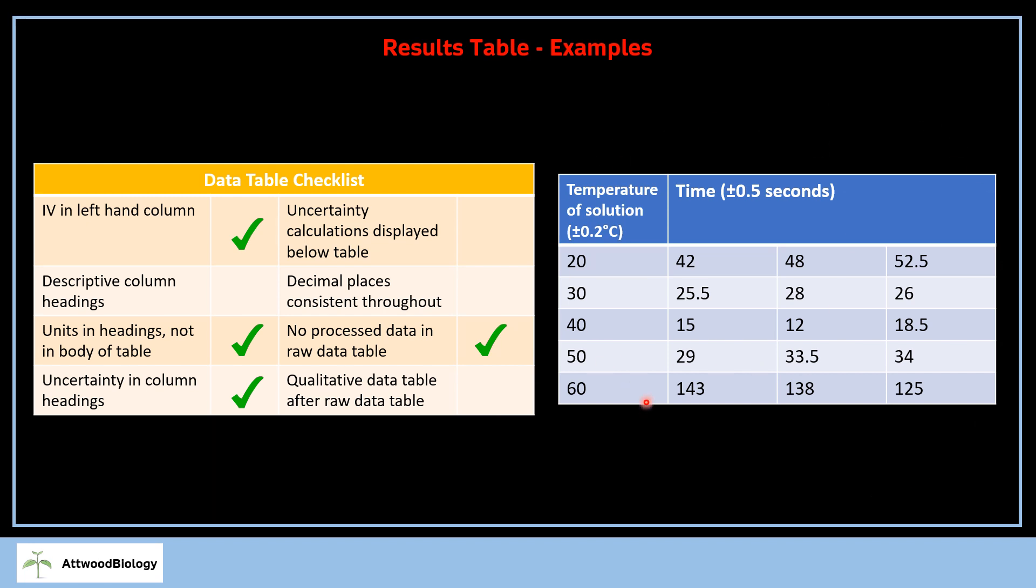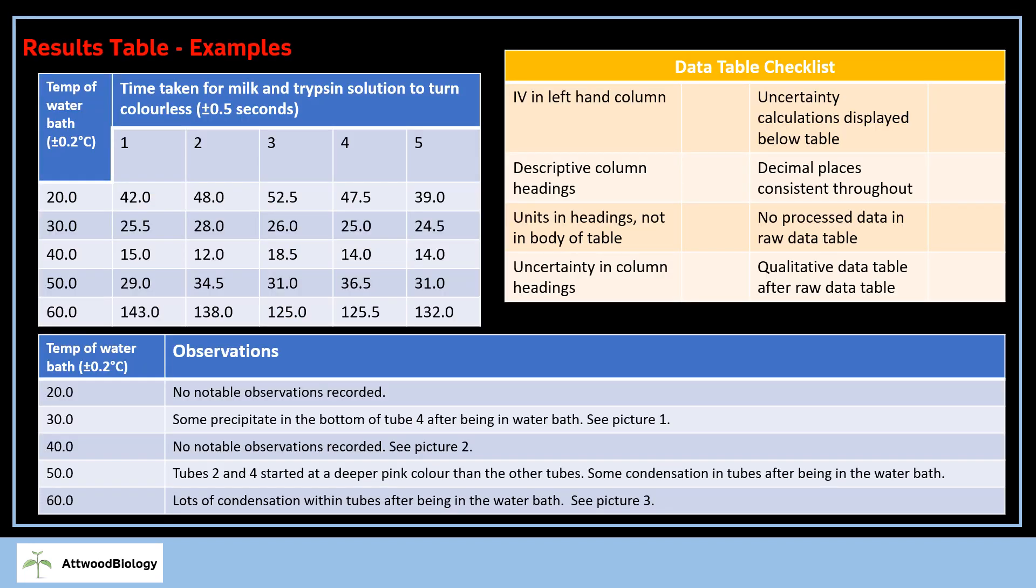We've got no processed data in the raw data table, which is good. Only raw data, only measured data—processed data will be later. This table is kind of average, not great. Some basics have been missed out. But if we look at this here, we've got those four already. We now have descriptive column headings. Before this just said time, but now we've got time taken for milk and trypsin solution to turn colorless. That's a descriptive heading.